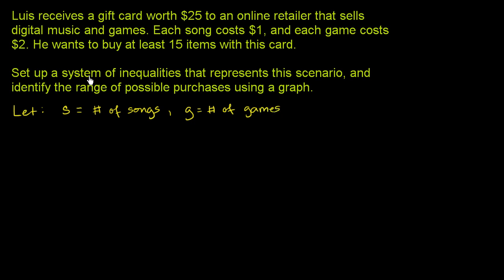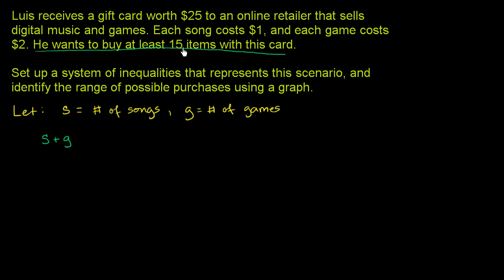They say that he wants to buy at least 15 items with this card. So that means the total number of items — the number of songs plus the number of games — has to be at least 15. So s plus g has to be greater than or equal to 15. It can be 15 or larger — 16, 17, 18, and so on.